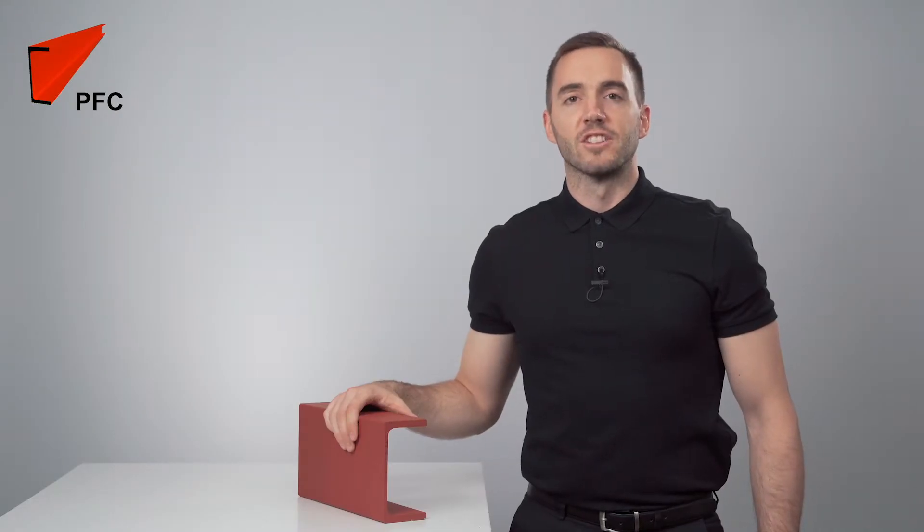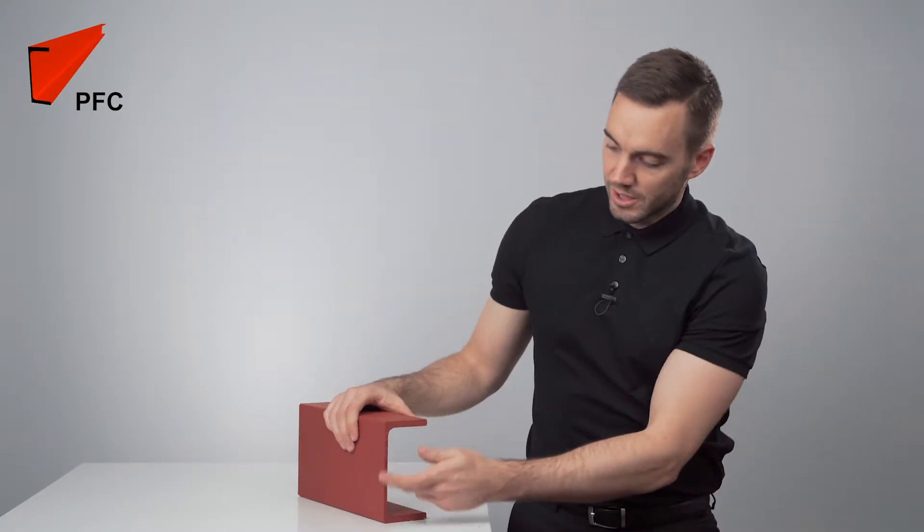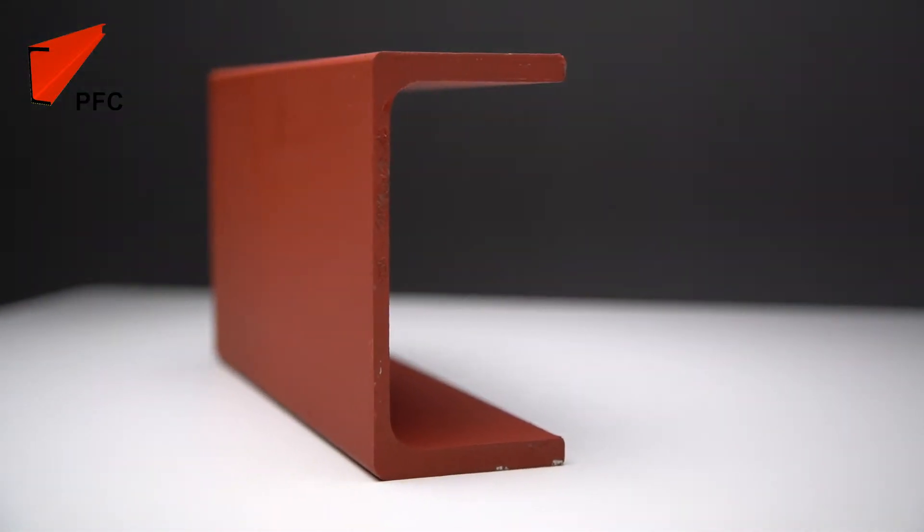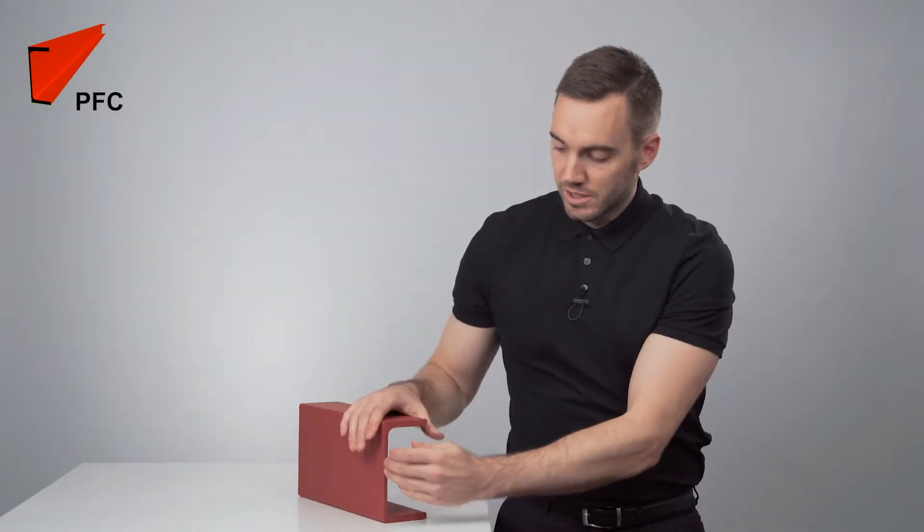A PFC is a parallel flanged channel. As you can see, it is quite often referred to as the C section. This is the top flange, this is the web, and this is the bottom flange. PFCs are described by three numbers.